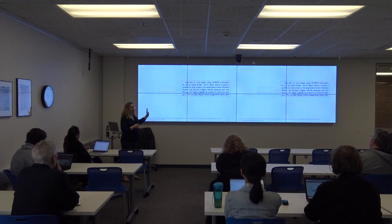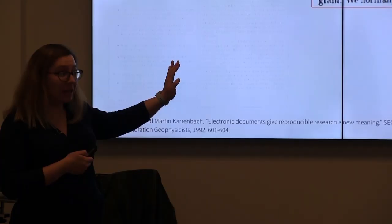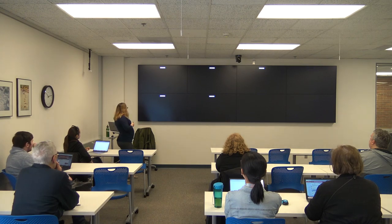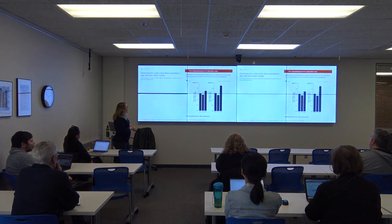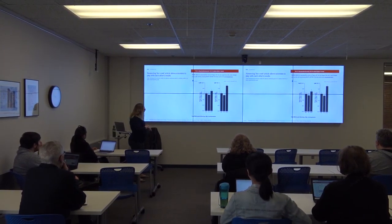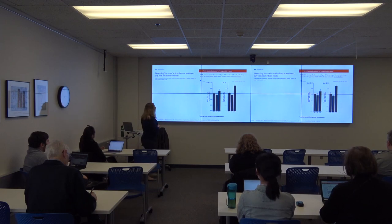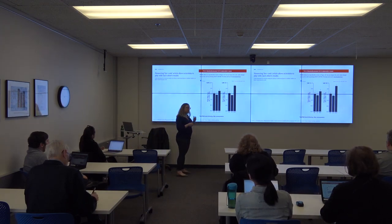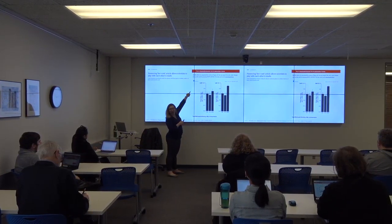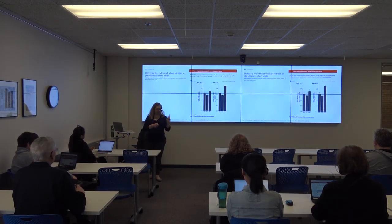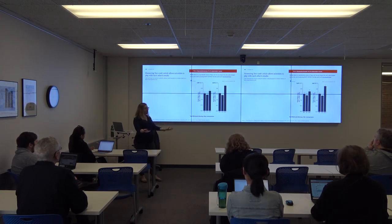We're way beyond CD-ROM publications at this point, but that still sounds a little space-age if you think about how journal articles look nowadays. This was a study published in 2018, just coming live in 2019, and the news says 'Pioneering live code article allows scientists to play with each other's results.' In this first-of-its-kind published article, you can actually click on an R script button and recreate a figure. So the goal they set in 1990 has just been achieved, it seems, with a single article as a prototype for now — which shows that this may be doable.